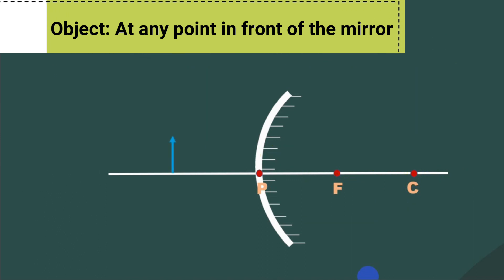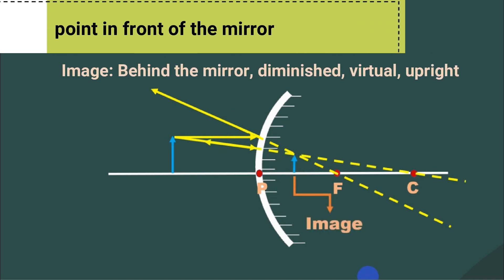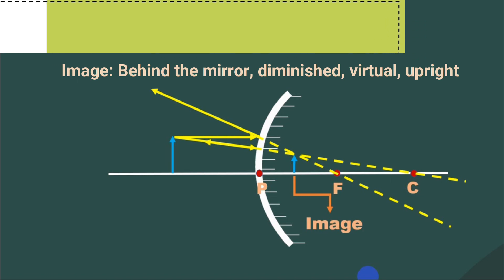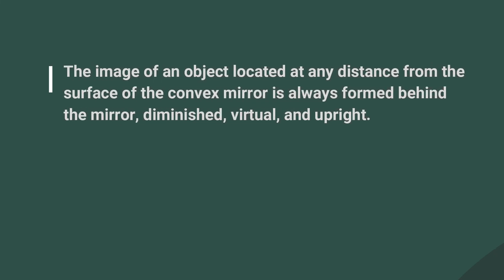What if the object is moved closer to the mirror? Using the same rules 1 and 2 for the light rays, the image is still formed behind the mirror — diminished, virtual, and upright. The conclusion is that the image of an object located at any distance from the surface of the convex mirror is always formed behind the mirror, diminished, virtual, and upright.